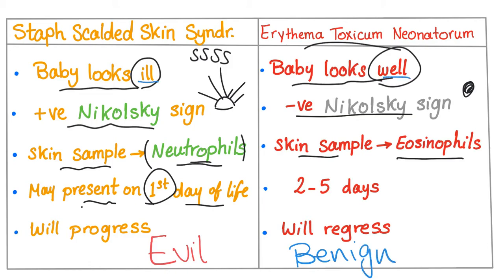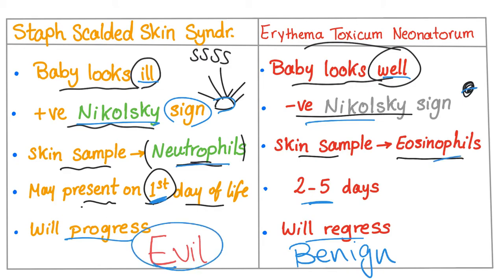To summarize: SSSS — baby looks ill, presents on the first day, will progress, positive Nikolsky sign with bullae that rupture, and neutrophils on microscopy. Erythema Toxicum Neonatorum — baby looks well, presents at two to five days, will regress, negative Nikolsky sign with intact skin, and eosinophils on microscopy.